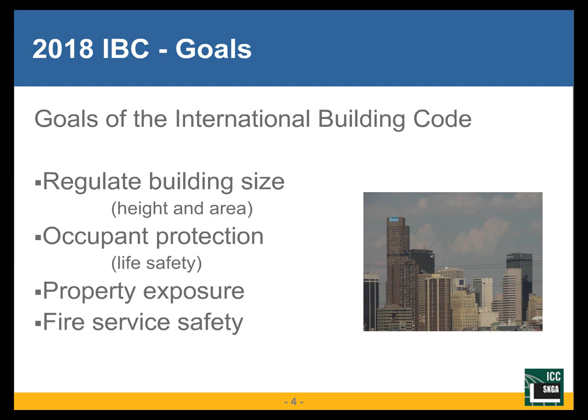Fire resistance is addressed because of several goals the building code has always had. The first is that it wants to regulate how big or how tall a building you're allowed to build — both in height and footprint area. I use this expression when I teach: if we're going to build a bonfire, we need to know how many combustibles we're going to have. If we want to restrict the size and the building is bigger, we're going to have to either reduce combustibles or increase fire resistance in order to allow the building to be a larger size.